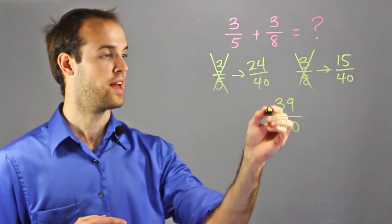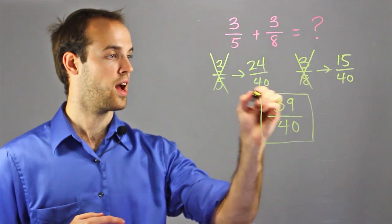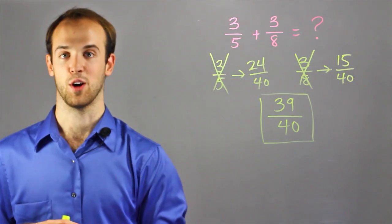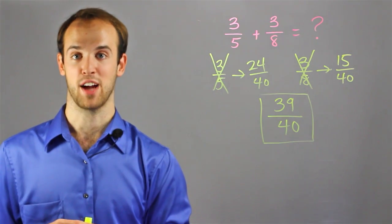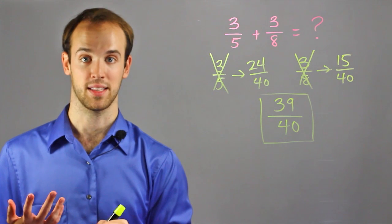So 3 fifths plus 3 eighths equals 39 over 40. So I'm Drew Moyer, and that was how to change fractions with unlike denominators, but the same numerator.